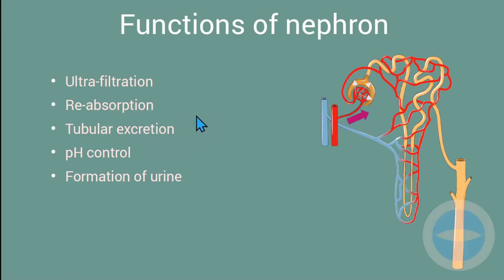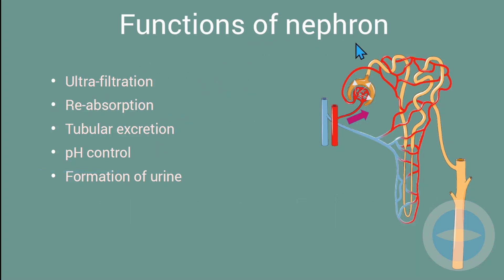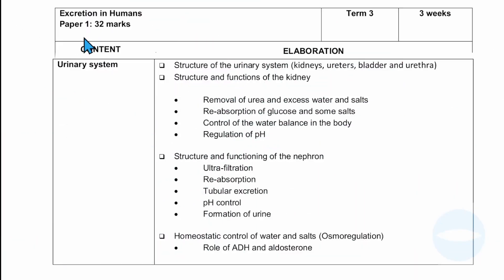Hello everyone, welcome back to our channel. My name is Veli Leningosi. Today I will be looking at the functions of a nephron — specifically how nephrons perform their function of removing waste substances from the blood. As always, we start with the examination guidelines. This is for Grade 11s, under excretion in humans, falling under Paper 1, which carries 32 marks.